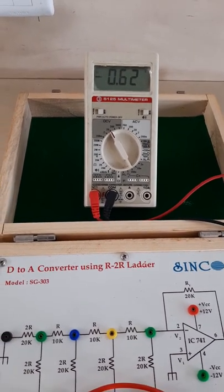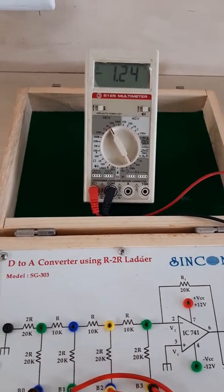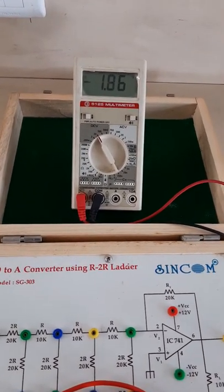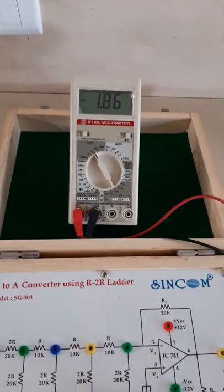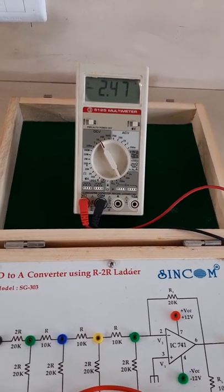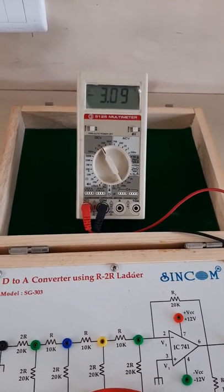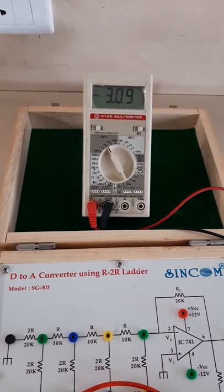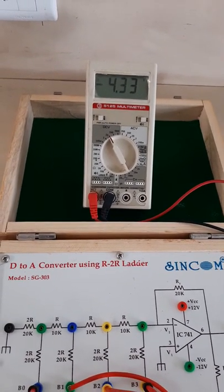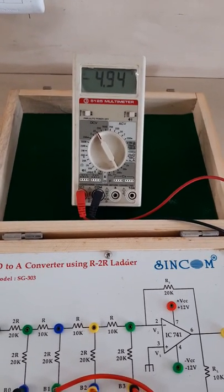Now the next level is 0010, the output is 1.09. Testing continues through several more input combinations, progressing through values. For 0111 the output is 4.33, and for input 1000 the output is 4.94.